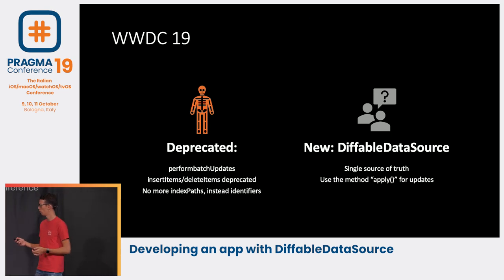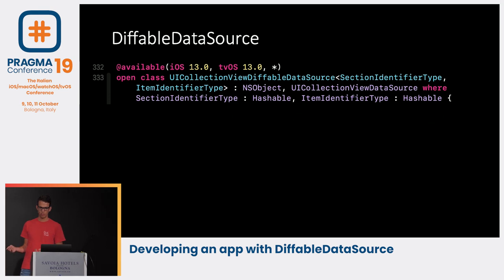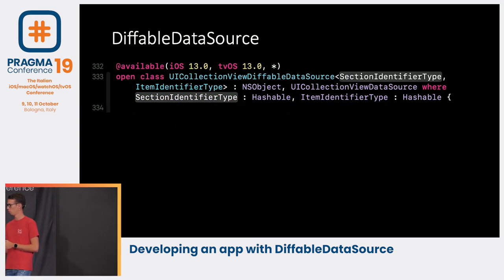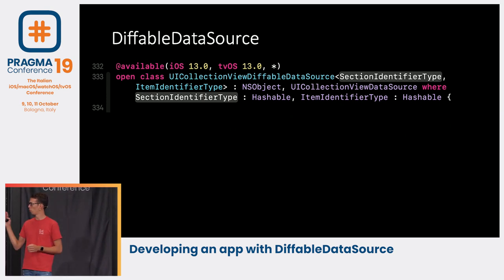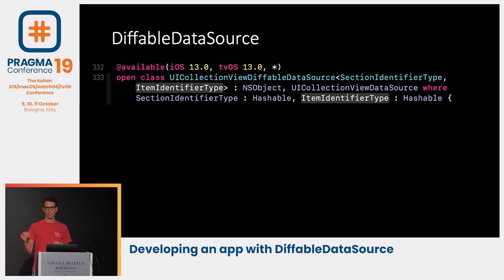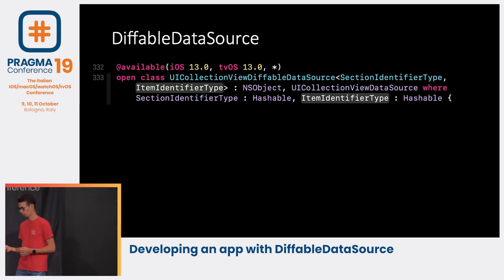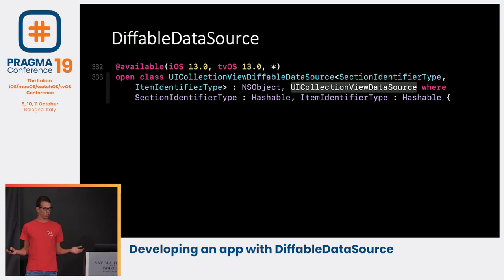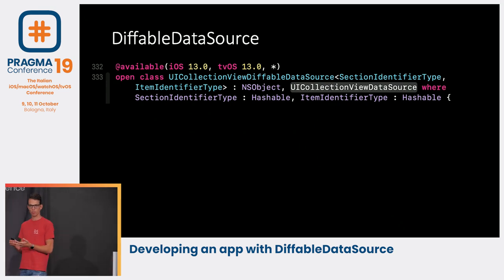Let's look at the implementation of the Diffable Data Source. It's quite a mouthful — we have UICollectionViewDiffableDataSource with a generic type: a SectionIdentifierType and an ItemIdentifierType. Don't worry, we'll go through this step by step. The SectionIdentifierType has only one constraint: it has to conform to Hashable. The same applies to the ItemIdentifierType. The SectionIdentifierType is used for all your sections, and the ItemIdentifierType is used for all items within a section. This class also automatically implements the data source methods, so we don't have to worry about numberOfSections or numberOfItems — Apple does that for us.